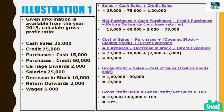The information given: cash sales 25,000, credit sales 75,000, purchases cash 15,000, purchases credit 60,000, carriage inwards 2,000, salaries 25,000, decrease in stock 10,000, return outwards 2,000, wages 5,000. From this given information we have to calculate gross profit ratio.